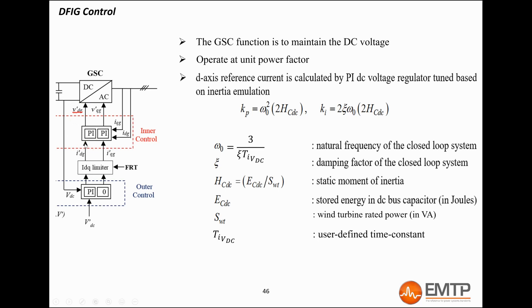Before being used by the inner loop, the current reference is limited by the id-q limiter block, so the converter does not exceed its current capabilities, which could cause hardware damage. The limiter function will be explained later on in this presentation. The gains of the outer loop PI controller for the d-axis are calculated based on the DC bus capacitance. The equations used are explained here.